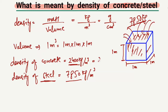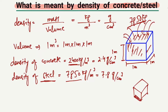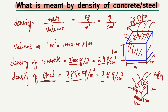Density can also be expressed in gram per cubic centimeter. The density of steel is 7.8 gram per cubic centimeter. If this cube has dimensions of one centimeter in length, one centimeter in width, and one centimeter in height, then the weight of concrete in one cubic centimeter is 2.4 grams. Similarly, for steel, 7.8 grams of steel fit into one cubic centimeter volume.